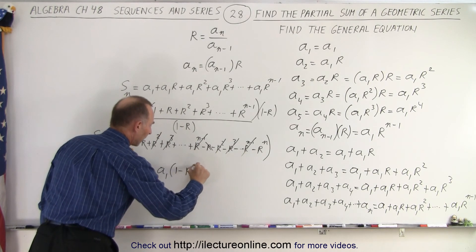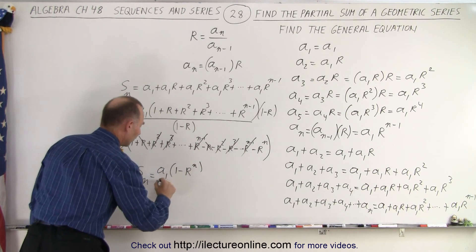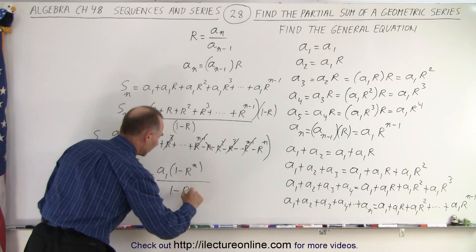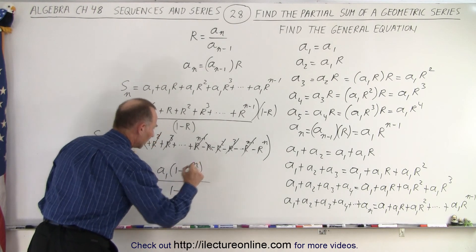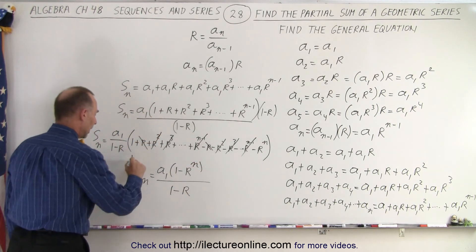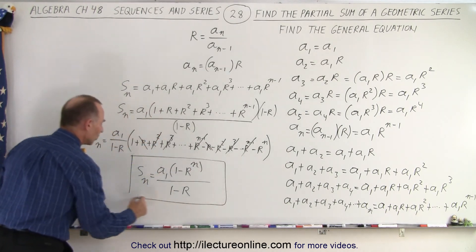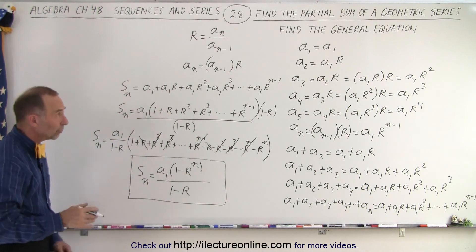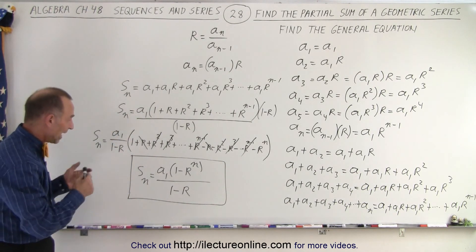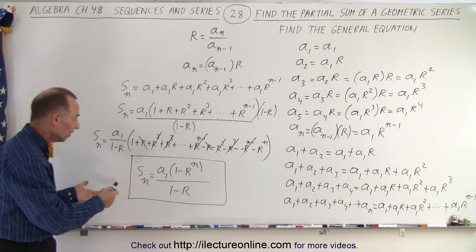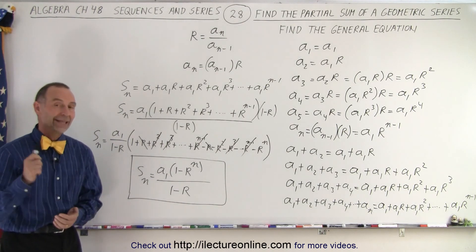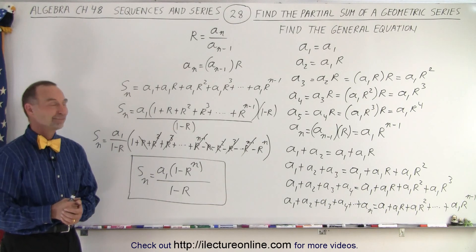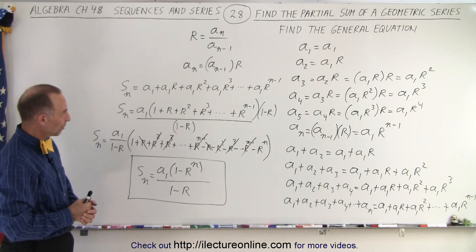So rewriting this equation, S sub n is equal to a sub 1 times 1 minus r to the n, divided by 1 minus r. And that is the equation we used on the previous video to find the partial sum of the first n terms in a geometric series. That is how the equation is derived — pretty tricky, but it works.